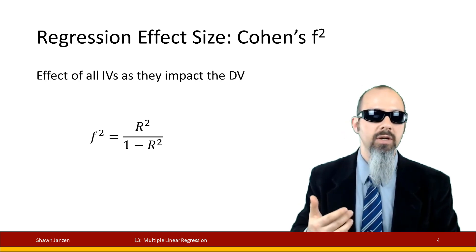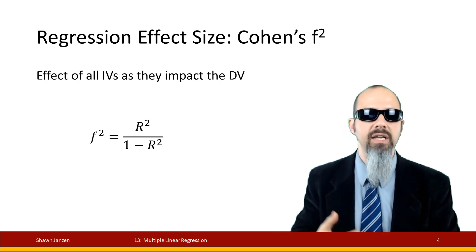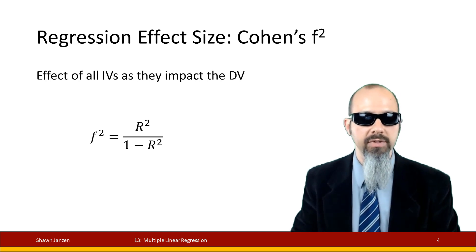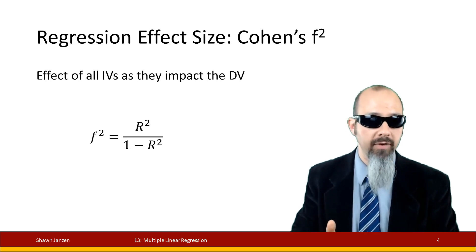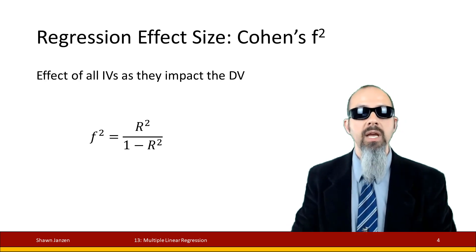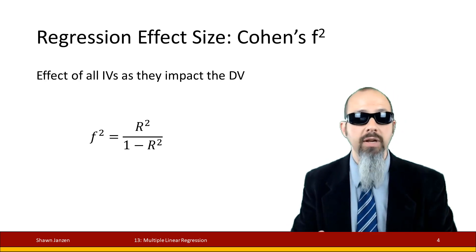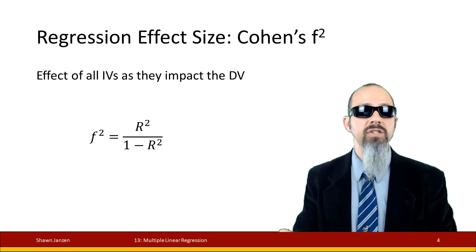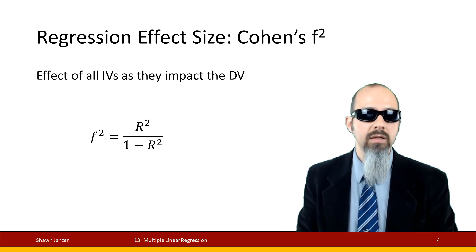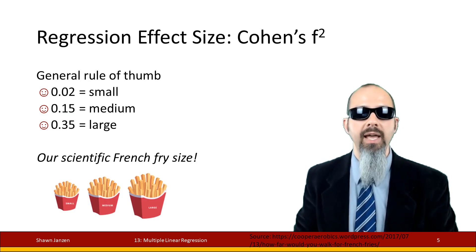Cohen's f² is the effect of all your independent variables as they affect your dependent variable. You can use this in simple or multiple regression. The formula is straightforward: it's your r² value divided by 1 minus r². Not so bad, huh? If we apply our french fries size to it, those scientific french fries...